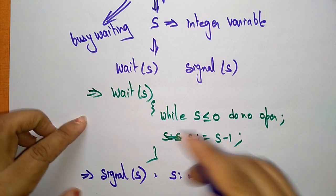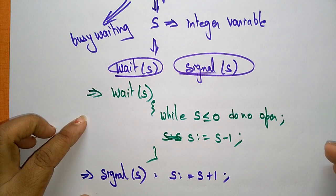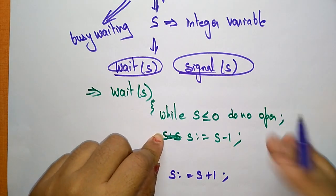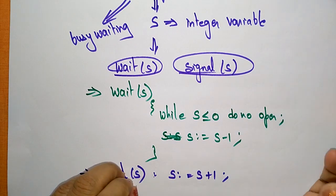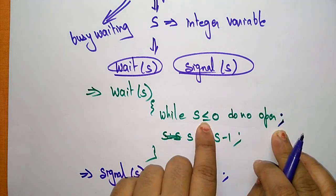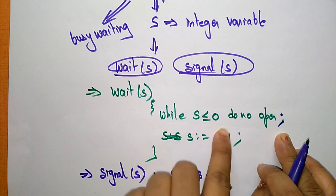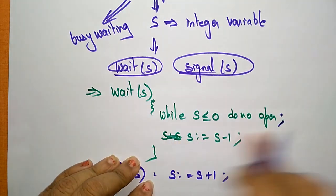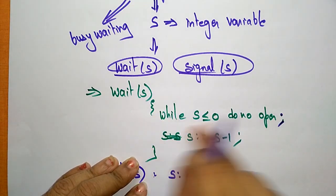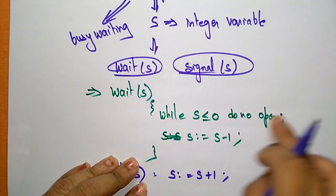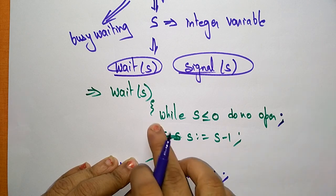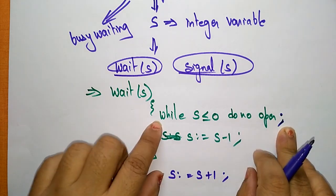Why does the semaphore use these two atomic operations, wait and signal? Whenever the while condition is satisfied it would execute, but here there is no program because it ends with a semicolon — while S less than or equal to 0, do no operation. Whenever the condition is satisfied it does no operation, so it is continually looping — it is in a busy waiting state. We have to ensure this condition is not satisfied, so that the process executes without busy waiting. That is why we use the semicolon to end the statement.